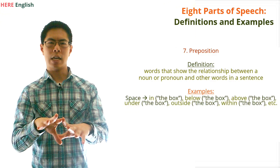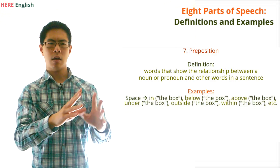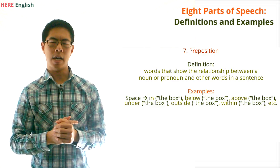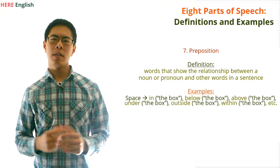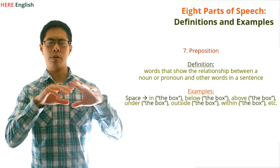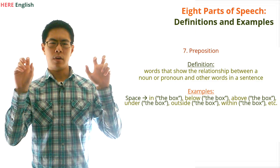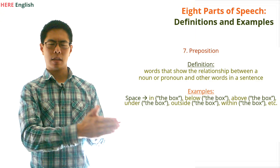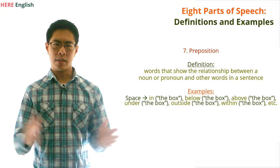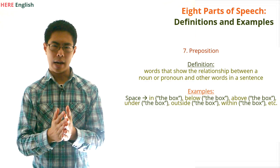Examples of prepositions that express a relationship in terms of space are in, below, above, under, outside, and within. An easy way to think of spatial prepositions is to think of where something can be in relationship to the box. We can say that something is in the box, below the box, above the box, under the box, outside the box, and within the box.